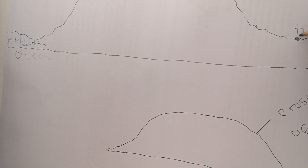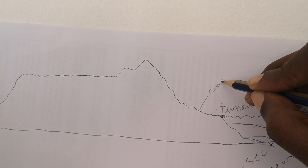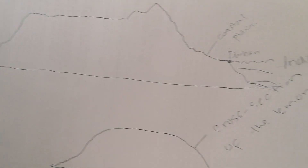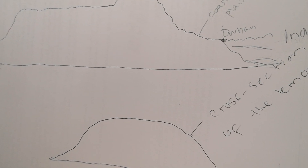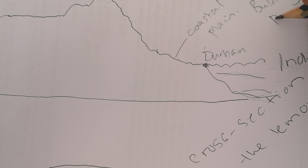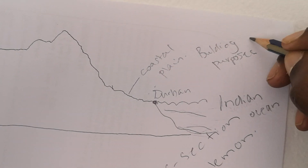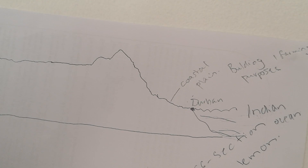Let's try to label this cross section. From the Indian Ocean we get to Durban, and there's an area here which is quite flat — we call that our coastal plain. The coastal plain is a low-lying area that stretches for some time. This area can be used for building purposes and also for farming purposes, because it's quite flat and gentle.